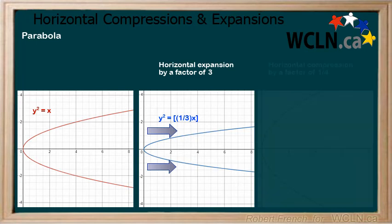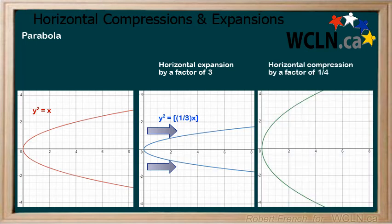Next, we will apply a horizontal compression to the original parabola by a factor of 1 fourth. We do this by multiplying x by 4. We can see how the graph changes accordingly.